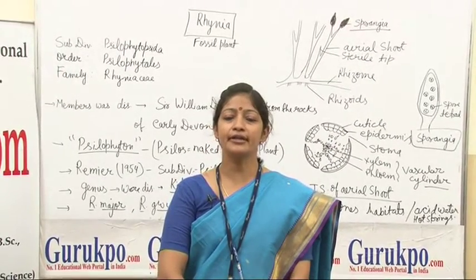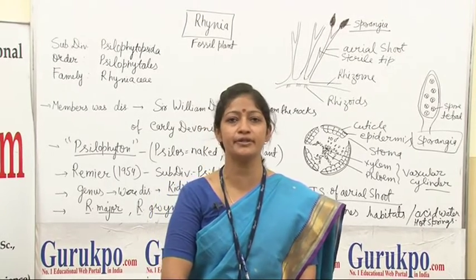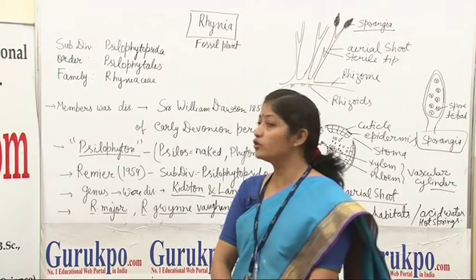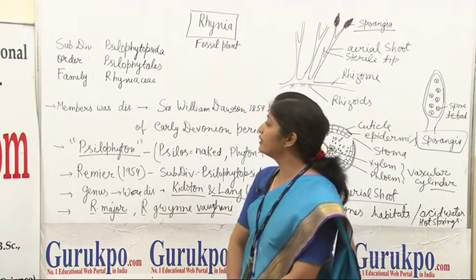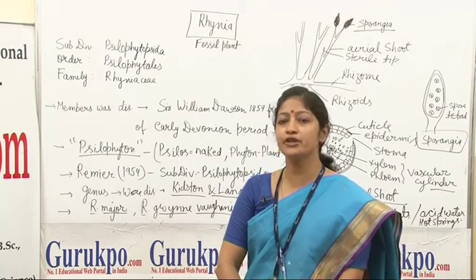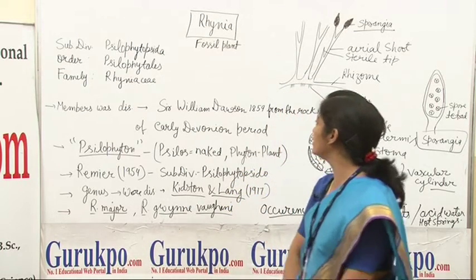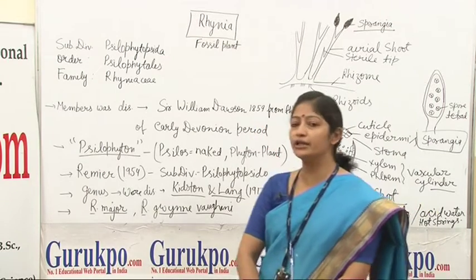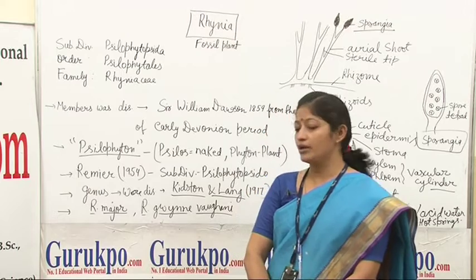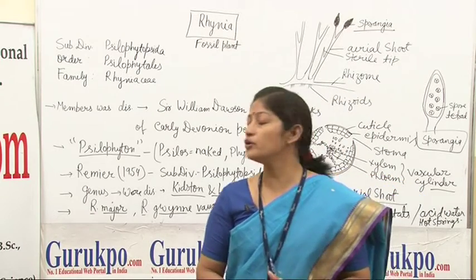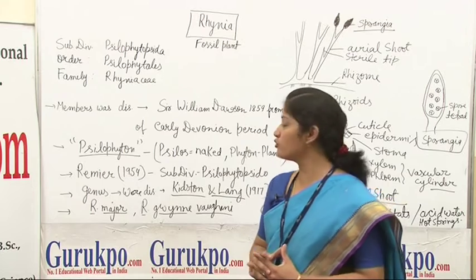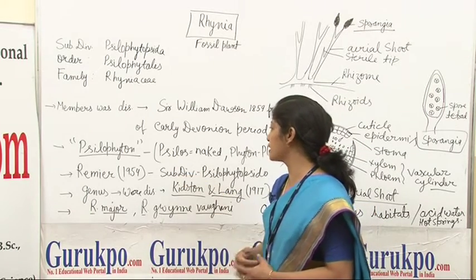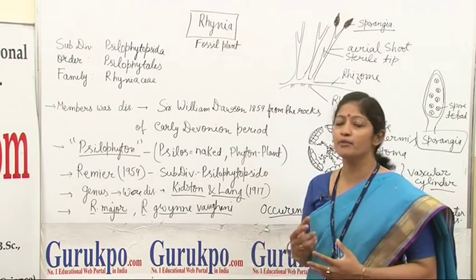Rhynia is a fossil plant which belongs to the subdivision Psilophytans, Psilophytopsida, order Psilophytans and family Rhyniasi. Members of this group were discovered by Sir William Dawson in 1859 from the rocks of the earlier Devonian period and they are commonly known as Psilophytans. The name comes from 'silos' meaning net and 'phyton' meaning plants.